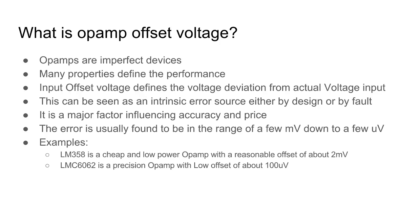The op amp offset voltage is an intrinsic error source, and it can arise by design or sometimes by fault. You might receive an op amp that was damaged, and the offset voltage will be determined by what sort of damage it experienced. Or maybe the manufacturer sold a unit that wasn't rigorously tested — a cheap unit that turned out to be bad. These are all factors that can affect performance, and offset voltage is a major factor influencing the accuracy of the device, which in turn affects the price.